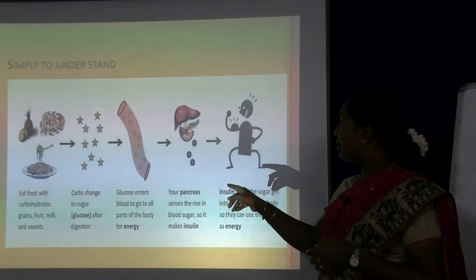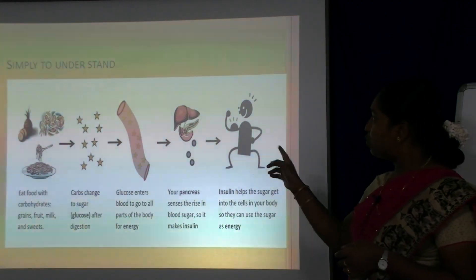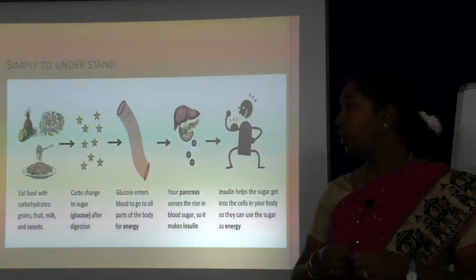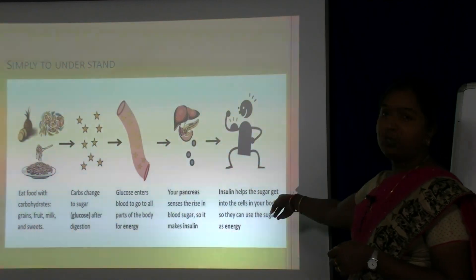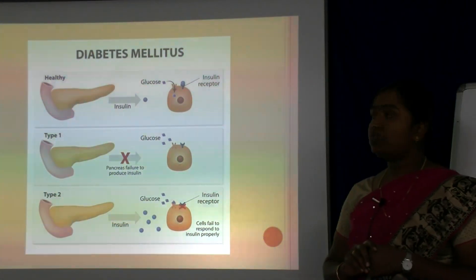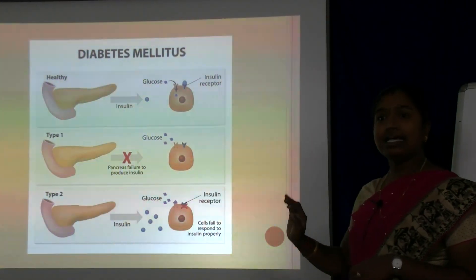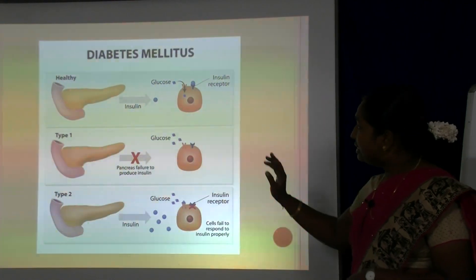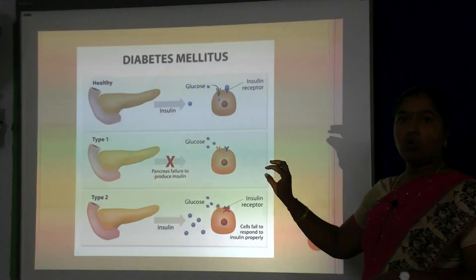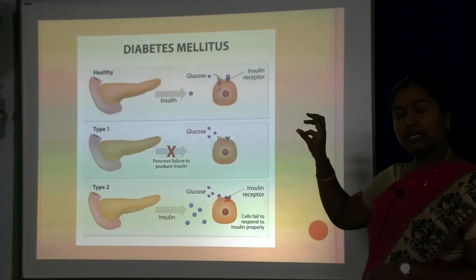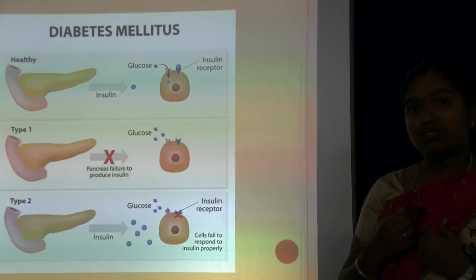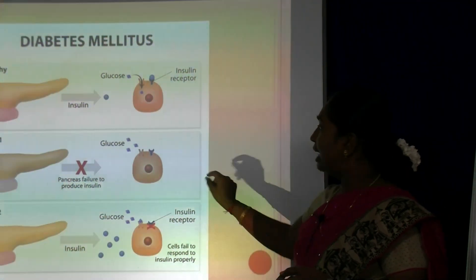The pancreas has to secrete insulin, which is the key molecule that takes up the glucose molecule to the cell where it produces energy. This slide shows the healthy pancreas and the diabetic pancreas. In a healthy pancreas, insulin is secreted normally; the glucose meets with the key molecule which is attached to the insulin receptor cell, giving energy.